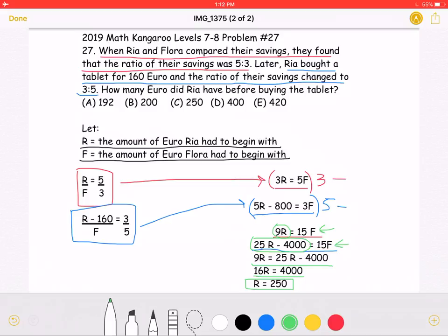Again, R is the amount of euro Rhea had to begin with. If we wanted to, we could plug this value back in to one of the previous equations to solve for F. However, the question asks for the amount of euro Rhea had before buying the tablet, which is R, so we don't have to solve for F at this point.